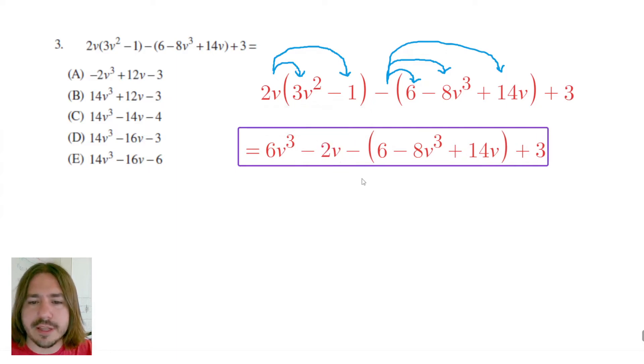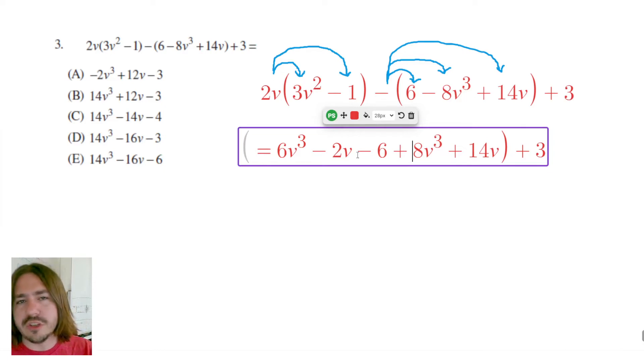Distributing this negative sign or really like a negative 1 is just going to flip all the signs of the terms inside this set of parentheses. So negative 1 times 6 is going to be minus 6. Negative 1 times negative 8v cubed will change that to plus, and this will change to minus.